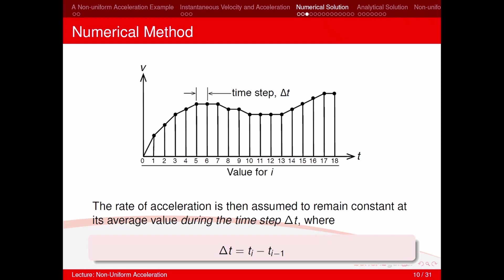The rate of acceleration is assumed to remain constant at its average value during each time step Δt, where Δt equals the current time minus the previous time. In this figure, Δt is equal to 1.